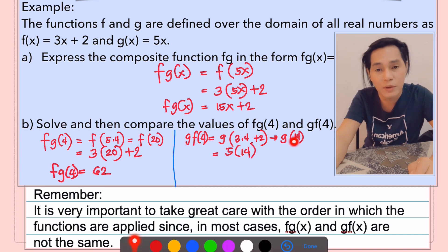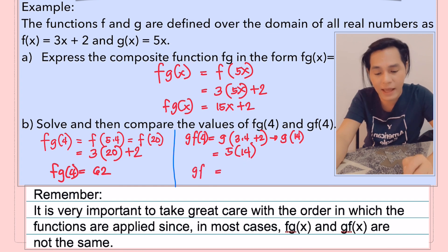Okay, which is we are going to substitute 14 to the function of g which is 5x. That's why you have there 5 times 14 is equal to 70. And this is now the value of g of f of 4.